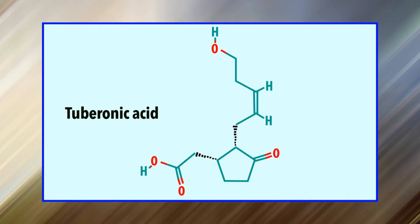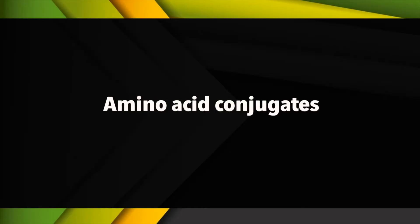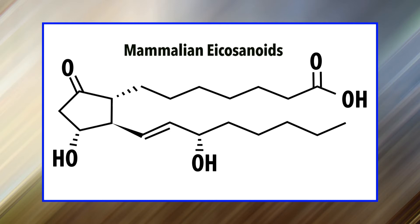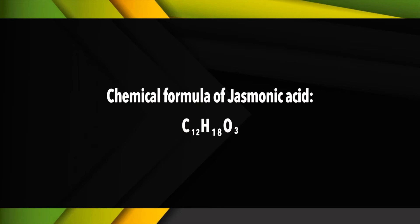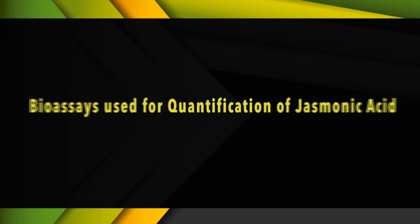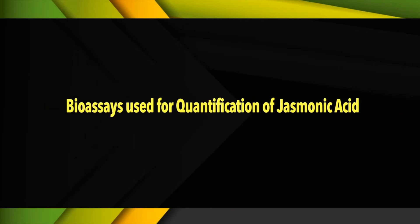Numerous derivatives of jasmonic acid are found in plants, including hydroxylated forms such as tuberonic acid and cucurbic acid, and amino acid conjugates. Their structure is similar to mammalian eicosanoids, which are also derived from lipids through the action of lipoxygenase. The chemical formula of jasmonic acid is C12H18O3. Now let me briefly explain some of the bioassays used for quantification of jasmonic acid.